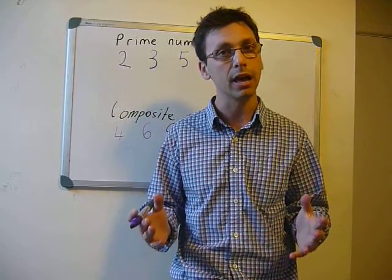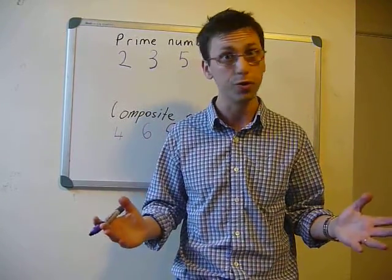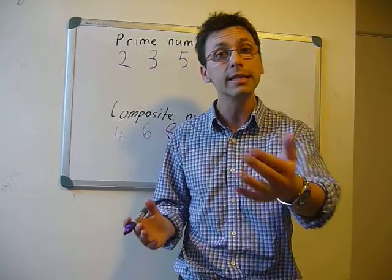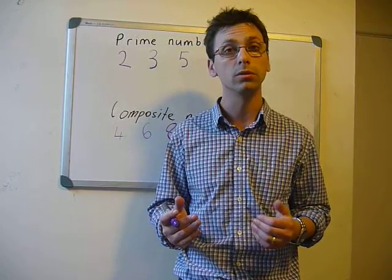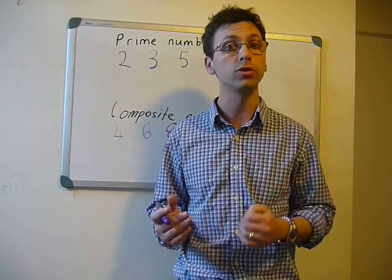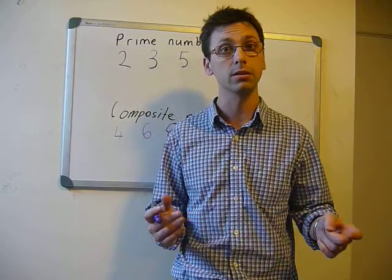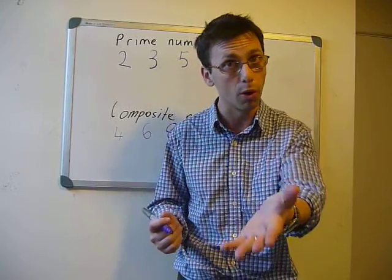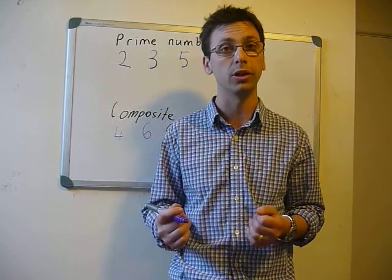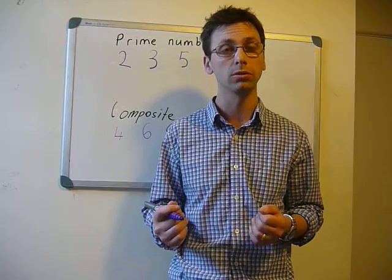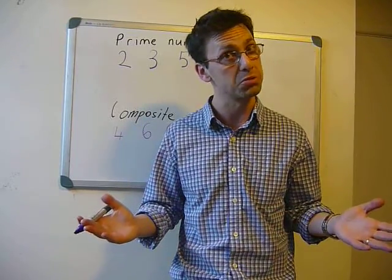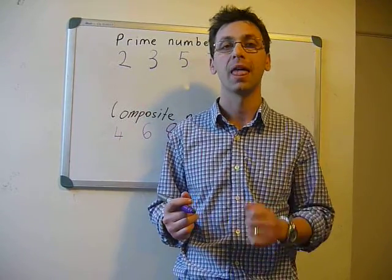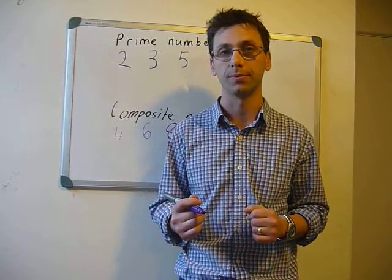But many numbers have more than two factors. Let's think about twenty-four: four times six equals twenty-four, twelve times two equals twenty-four, eight times three equals twenty-four, and twenty-four times one.